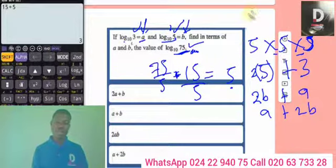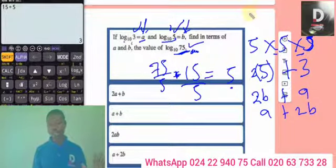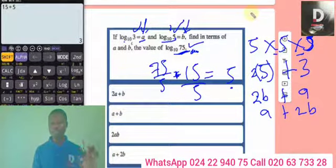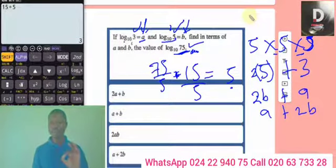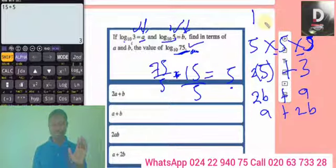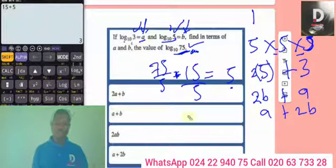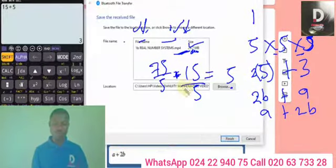Note: log 10 base 10 is a constant equal to 1. So in case after division you get a 10 somewhere, just put 1 there.